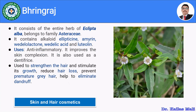Let us see the next drug, bhringaraj. Bhringaraj is mainly used in hair cosmetics, but it also has a role in skin cosmetics. Bhringaraj consists of the entire herb of Eclipta alba belonging to family Asteraceae. It contains mainly the alkaloid ecliptine, amyrene, wedelolactone, wedelic acid and luteolin. It is being used as an anti-inflammatory, improves skin complexion, and is also used in dentifrices. Mainly, it strengthens hair, stimulates hair growth, reduces hair loss, prevents premature graying of hair and helps to eliminate dandruff.